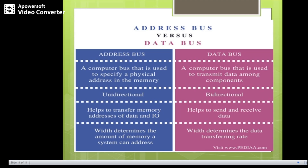The address bus determines the amount of memory a system can address. Under the data bus, the width determines the data transfer rate — we can improve the data transfer rate by increasing the width of the data bus. This table exactly specifies the differences between address bus and data bus.